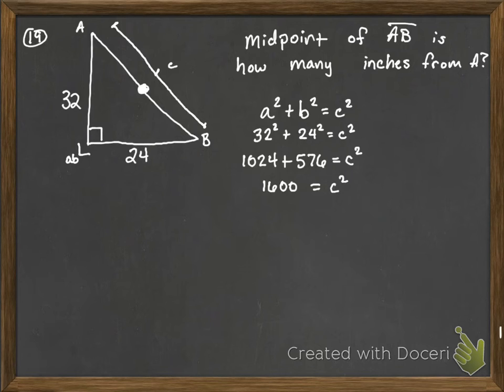And then to undo this squared, I need to take the square root of C squared. So I'm going to take the square root of 1,600. And when I do that, I get that C is equal to 40. So this whole length here, the whole length all the way across is 40.